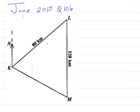LM is 120 kilometers and KL is 80 kilometers. Part I: on the diagram, show the bearing of 40 degrees. So on this diagram I need to show the bearing of 40 degrees.